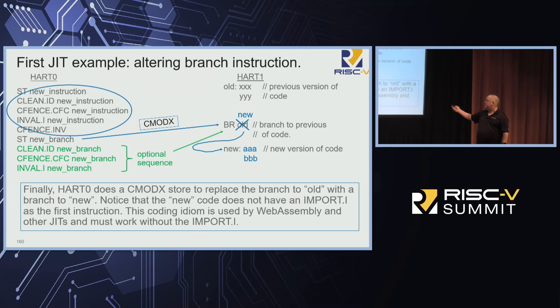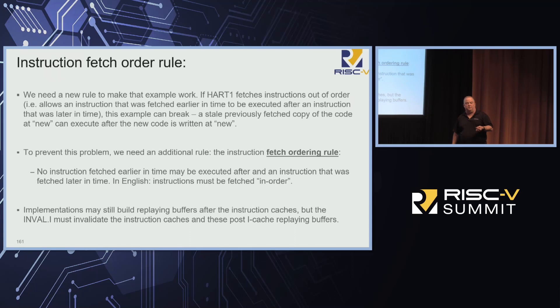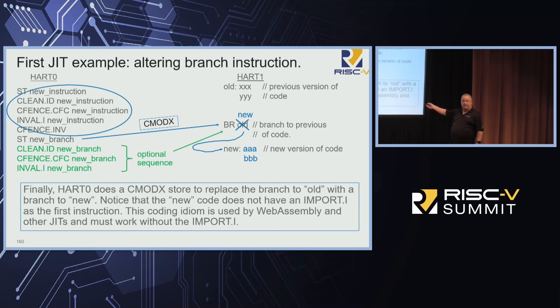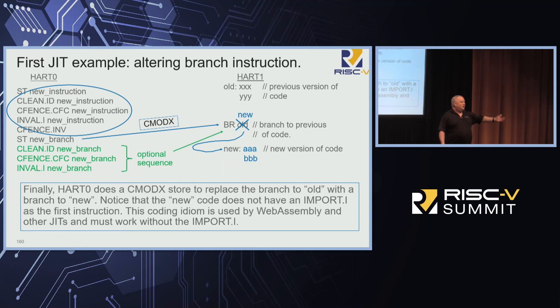The fetch ordering rule basically says: no instruction that comes later can be executed if it was fetched earlier than any prior instruction. So what you're guaranteed with the fetch ordering rule is that when you get through this branch-to-new, every instruction you're going to fetch and run after that came later in time. That solves the problem where you miss coming through here, and I don't have to put an import.I in there. We didn't have that rule because around 2017 WebAssembly figured out that certain JITs just demand this works without an import.I.